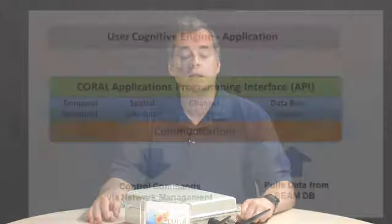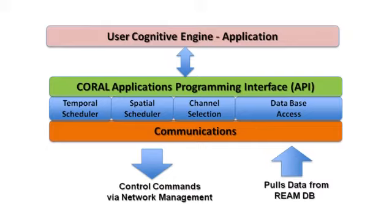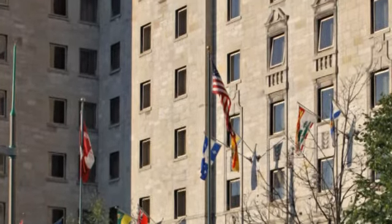It also provides an API for the cognitive engine to retrieve information stored in the relational database previously mentioned, to find out the operation of the network and, based on that information, decide on the optimal parameters for the operation of the wireless network. For example, a cognitive engine could be written for a hotel environment where multiple access points are deployed throughout the hotel. By using the CORAL capabilities, a centralized cognitive engine could sense the interference seen by the different access points, and then tweak the parameters of the network to maximize the bandwidth utilization.